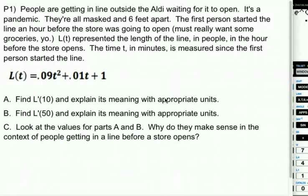Okay, so for P1, people are getting in line outside the Aldi waiting for it to open. It's a pandemic, so they're all masked and six feet apart. The first person, we'll call him Bob. Bob gets in line a full hour before the store opens. He really wants to get some groceries, that Bob. So L(t) represents the length of the line in people in the first hour before the store opens. So at time t in minutes is measured since Bob, the first person, got in line. Meaning that L(0), if you plug in a 0 into the length of the line, would be 1 because it's Bob.